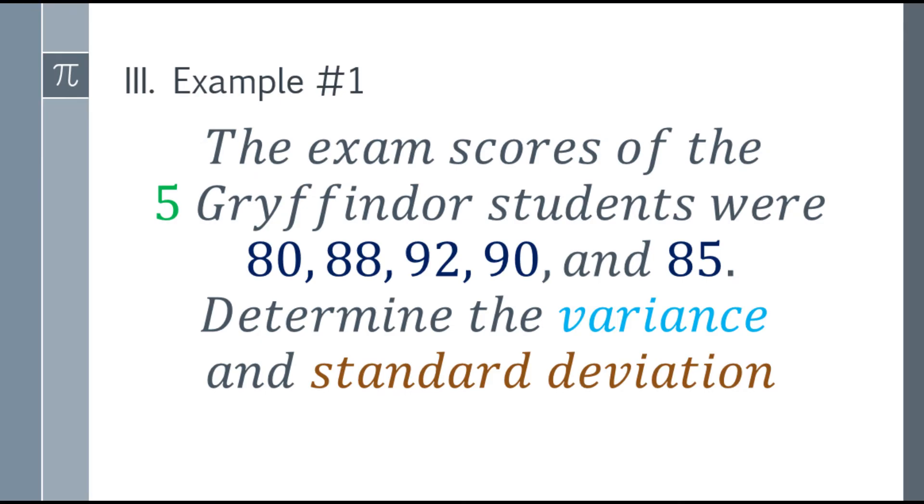Okay, so let's have the first example. The exam scores of the five Gryffindor students were 80, 88, 92, 90, and 85. Determine the variance and standard deviation.